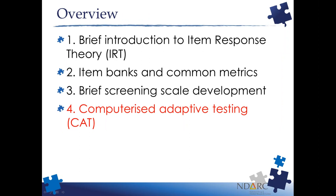By gaining in efficiency we sacrifice some precision, since we're using fewer items we aren't as confident around a person's true ability score. But what if we wanted to maintain both high efficiency and high precision - using as few items as possible while still maintaining confidence that the estimated score represents the true score? To do this, we need to forget about administering scales in a static fashion where everybody gets the same items, and instead start tailoring the administration of the item bank to each individual person. This tailoring is known as computerized adaptive testing, or CAT.